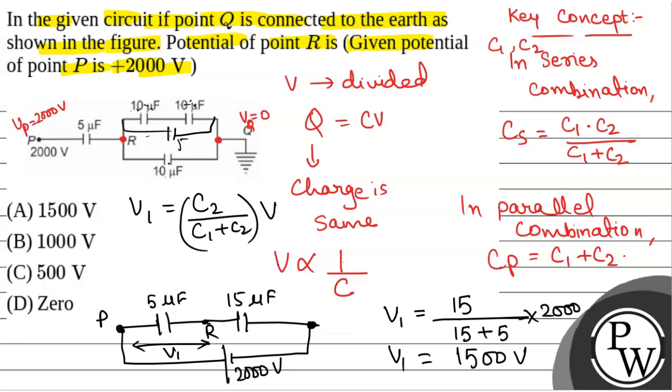So V1, we will have the potential of point R, that is 2000 volt minus 1500 volt, that is 500 volt. So the correct option will be option C.